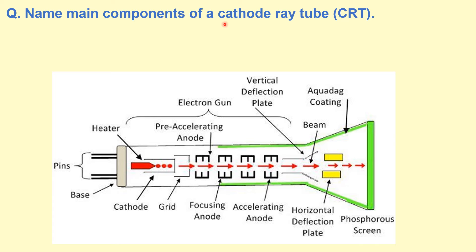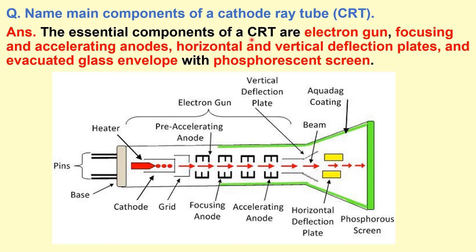So what are the main components of a cathode ray tube or CRT? So this is a diagram of CRT. It was used in a TV or computer monitor. The essential components of CRT are electron gun to generate the electron beam, focusing and accelerating anodes to give some acceleration to electrons, horizontal and vertical deflection plates to control the direction, and the evacuated glass envelope. And with a screen which is known as phosphorescent screen where we can see this electron beam on the screen.